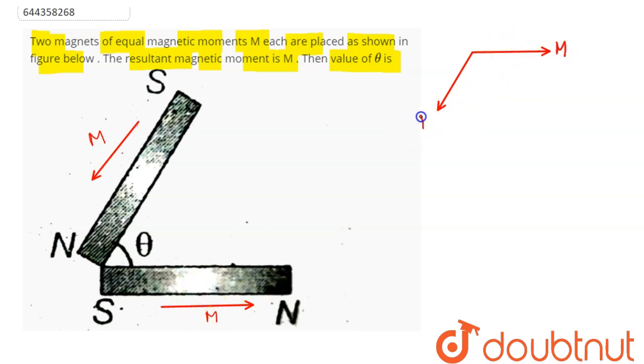And this angle here is given to be theta. Hence the resultant of these two according to parallelogram law of vector addition will lie in between, which here is angle given as 180 minus theta. So this resultant magnetic moment can be written according to parallelogram law of vector addition...